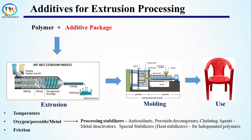Peroxide decomposers are secondary stabilizers which help to safely decompose peroxides. Peroxides are very dangerous for polymers because radicals formed from their decomposition are highly energetic and react with other polymer chains to break them, forming additional peroxides — starting an autodegradation cycle. Therefore, additives are required to safely decompose peroxides so they cannot react with polymer chains and create more peroxides. Chelating agents are also added to protect polymer from metals. Some special stabilizers are added for halogenated polymers, since their degradation mechanism differs from normal polymers.